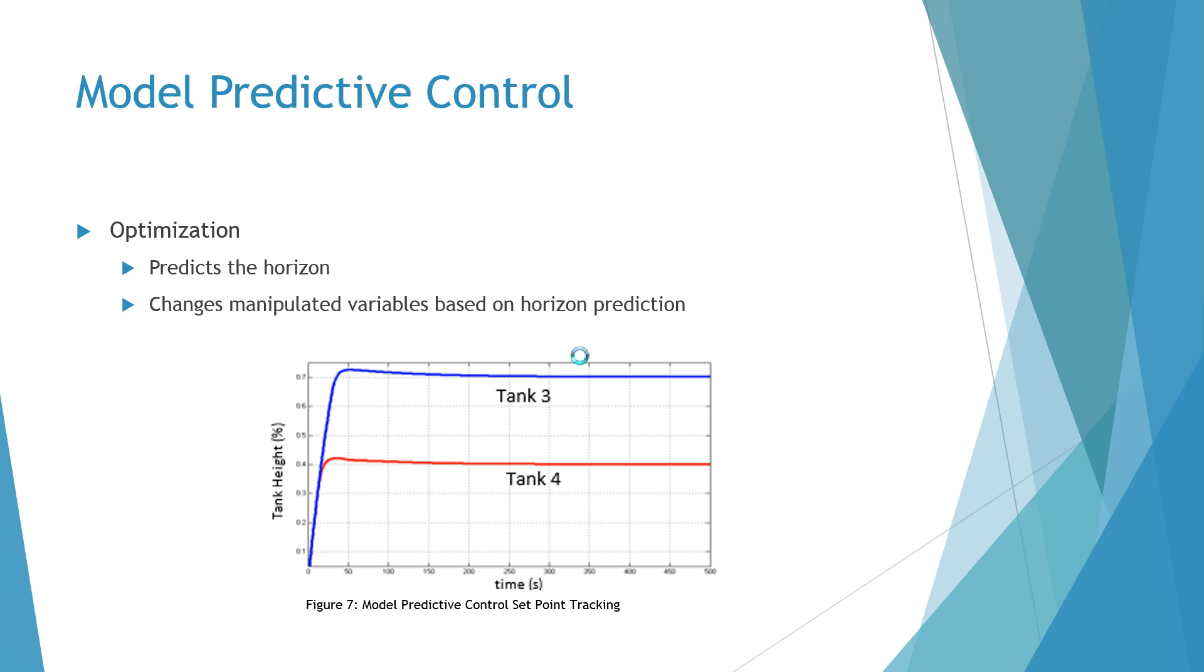After testing these PID controllers we wanted to compare their performance with model predictive control. The purpose of model predictive control is to use the equations associated with the system and predict a horizon, finding what changes in the manipulated variables will give an output that reaches the set point in the best way.